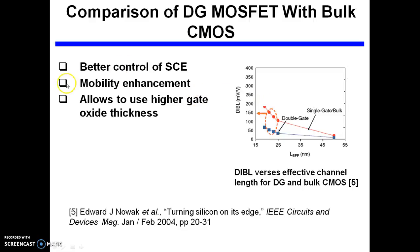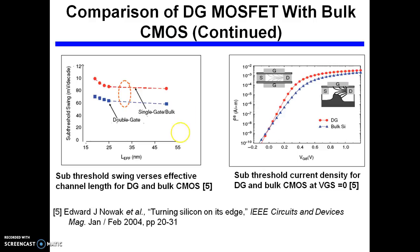The double gate MOSFET also provides mobility enhancement and allows the use of higher gate oxide thickness. Another advantage is sub-threshold swing — in single gate bulk MOSFET the sub-threshold swing has severe degradation, but in the double gate structure it is near ideal and can be controlled effectively.